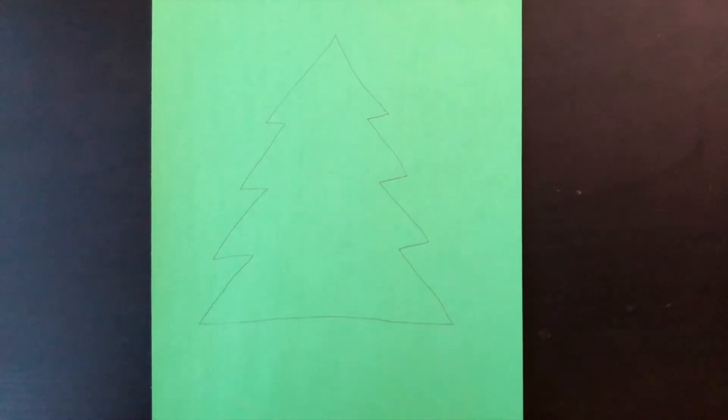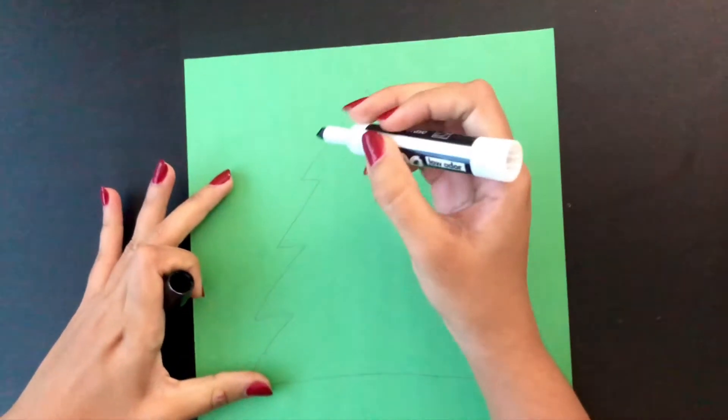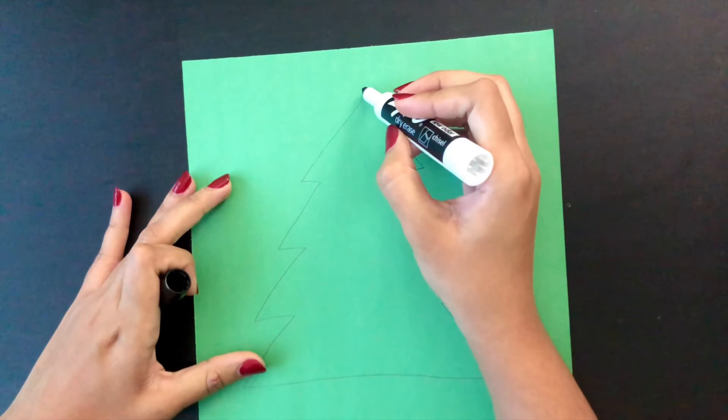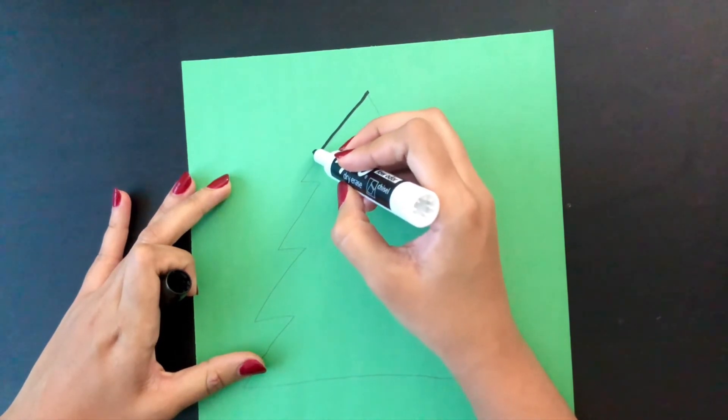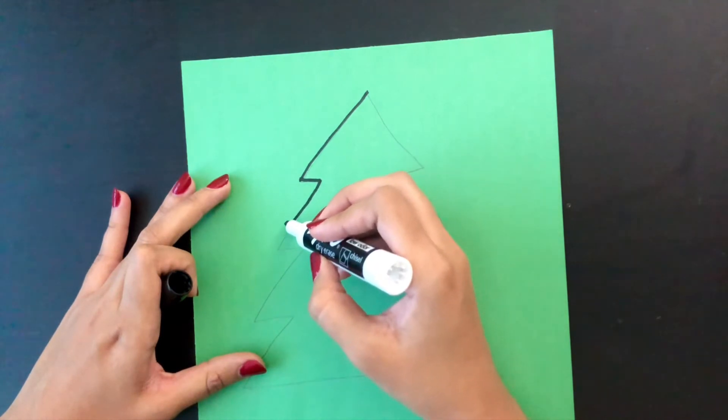Now that you have your materials, let's begin by drawing the outline of a Christmas tree. We will do it on two green construction papers. Basically, you're going to draw really big triangles, like this.